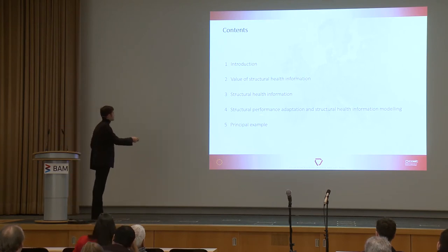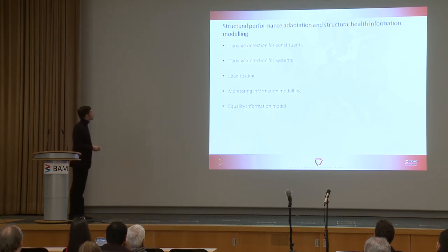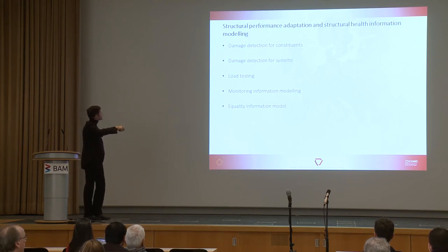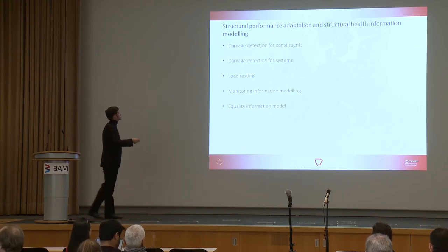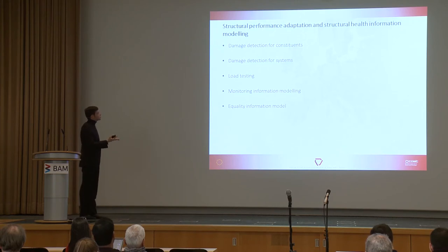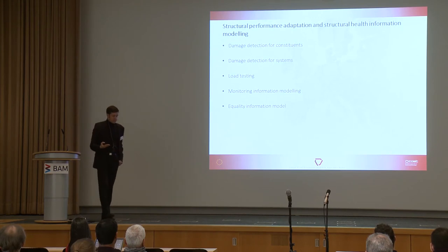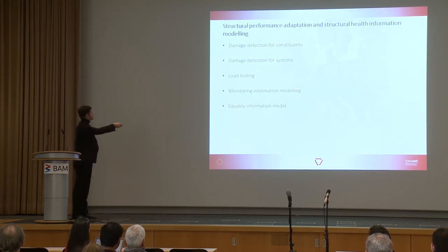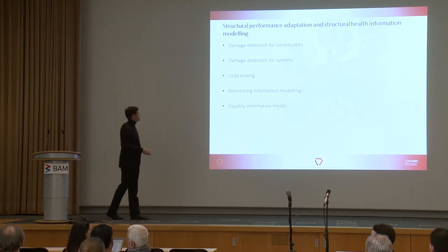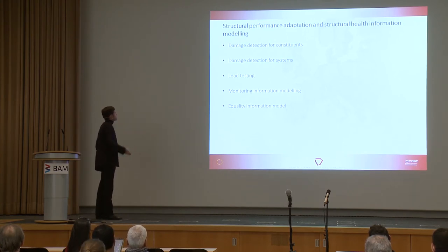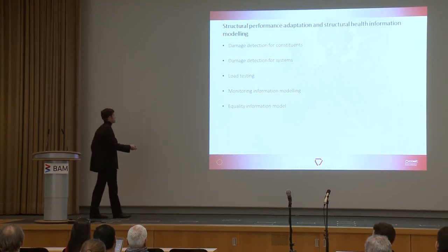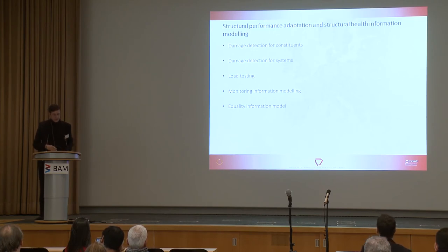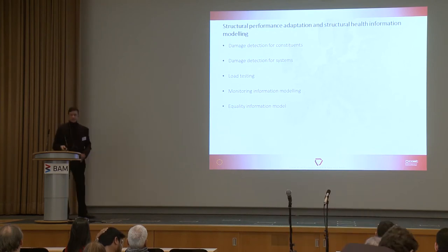Coming to part four: structural performance adaptation and structural health information modelling. We may develop very similar approaches for different types of structural health information. At a very local level, inspections or damage detection for systems may rely on the static and dynamic behaviour of the structure and analysis with regard to a reference state. Load testing is one way of information acquisition. And then we come to monitoring information, which may also be modelled as equality information, where the limit state function is an inequality and we have equality information because we know that some structural property is equal to a measured value.